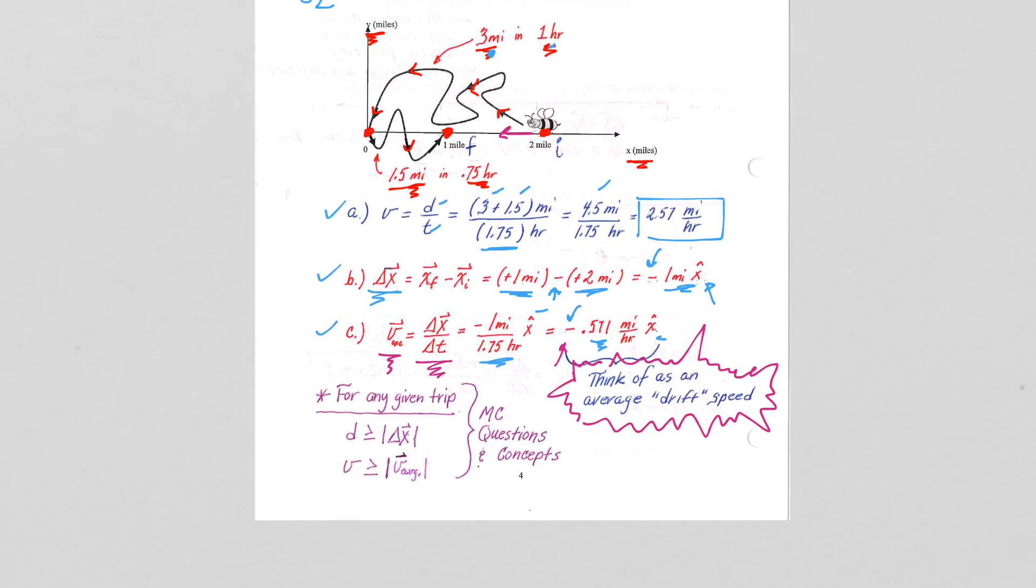The last piece of information I have on this page of notes is really addressed more in multiple choice questions, but certainly a concept I hope we understand at this point. That is that the total distance traveled will always be greater than or equal to the delta x, the displacement. So the shortest distance between two points is a straight line. So that's why that fact is correct. And then if that fact is correct, the same is true for speed and average velocity. So the average velocity represents the drift in the x direction. That will always be less than or equal to the average speed. And hopefully that makes sense.